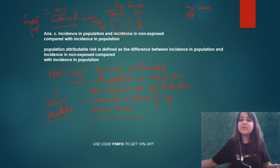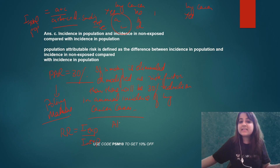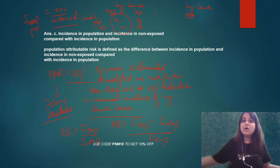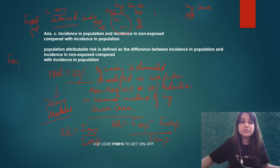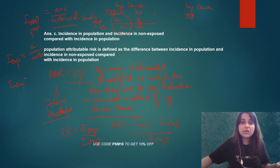There are two other measures of strength of association used in a cohort study. One is relative risk: incidence exposed divided by incidence non-exposed. The other is attributable risk: incidence exposed minus incidence non-exposed, divided by incidence exposed — this tells us what percent of lung cancer is attributed to smoking. Incidence exposed is A divided by A plus B; incidence non-exposed is C divided by C plus D.